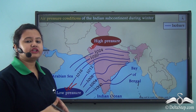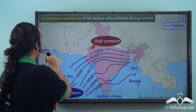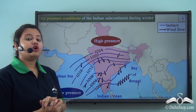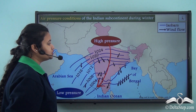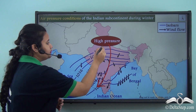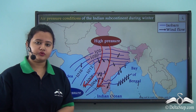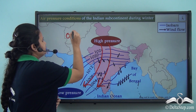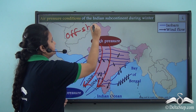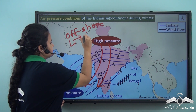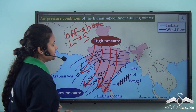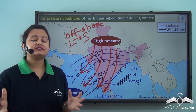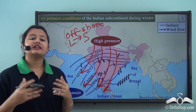This difference in pressure conditions results in wind flow, as wind always blows from high to low pressure regions. So winds over the Indian subcontinent blow towards the low pressure regions of the surrounding water bodies. These are offshore winds because they blow from land to sea, and therefore they are dry. During winter, cold, dry, chilly winds blow over the Indian subcontinent.